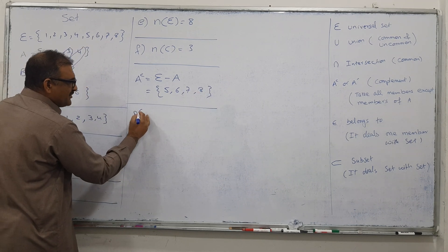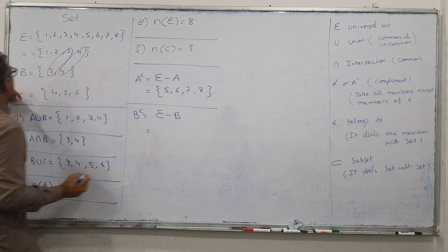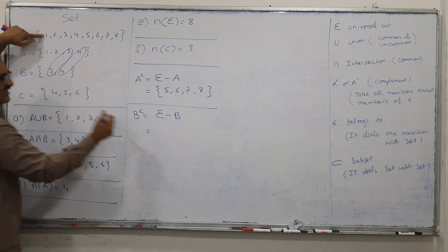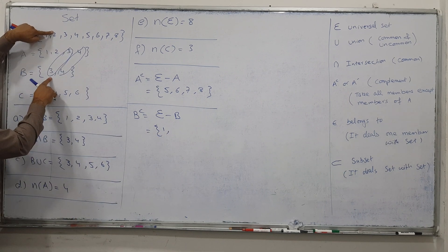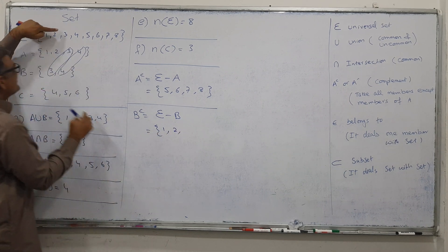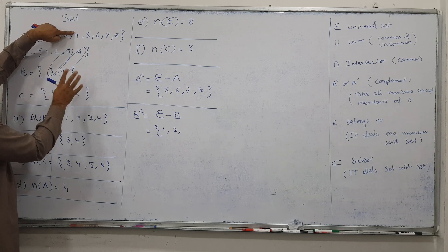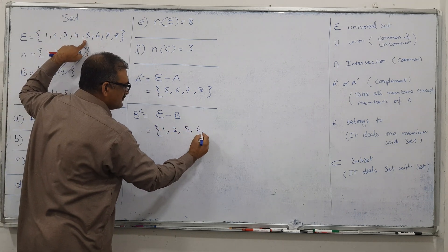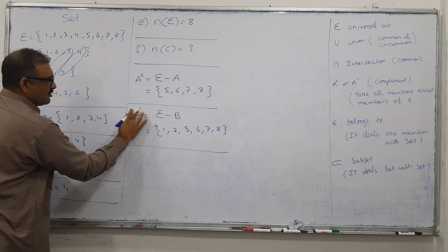If someone asks what is B complement, so from universal, subtract B — do not take those members that are present in B. Is 1 present in B? No, so take it. Is 3 present in B? Yes, present — so don't take it. Is 4 present in B? Don't take it. And the rest are not present in B, so take all. This is called complement.